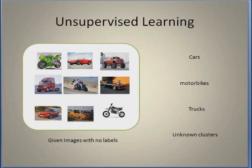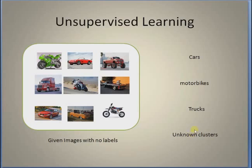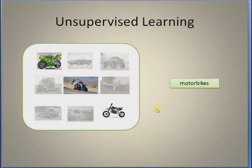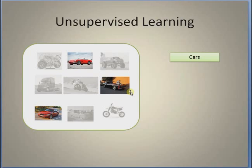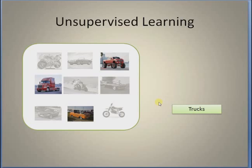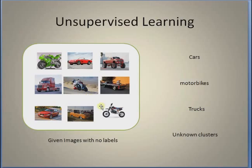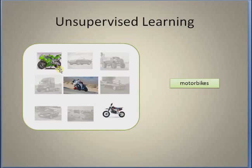Here is an illustration of an unsupervised learning problem. Consider a set of images where the main challenge is that there is no target vector — that is, there is no label for any of these images. In other words, we do not have any training data. The goal is to categorize these images into their respective classes, and sometimes we may not even know what the target classes are. An ideal unsupervised learning machine can group images into categories such as motorbikes, cars, and trucks. The images of bikes may be different from each other, but they all have similar features.